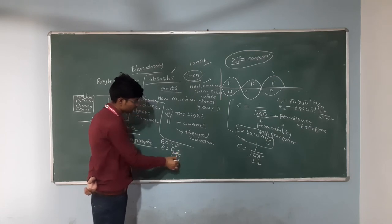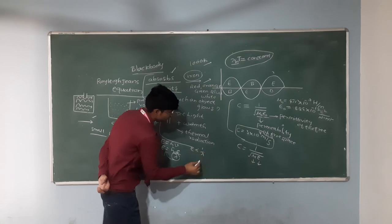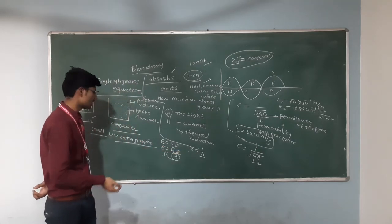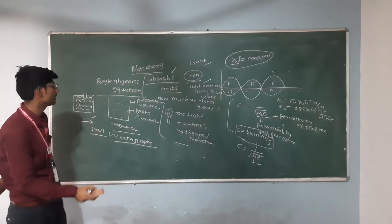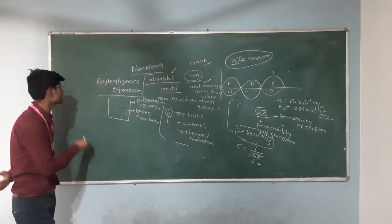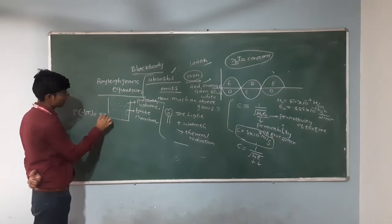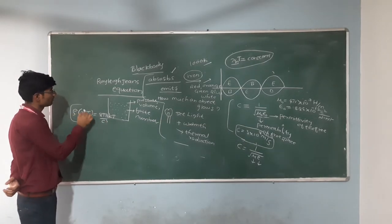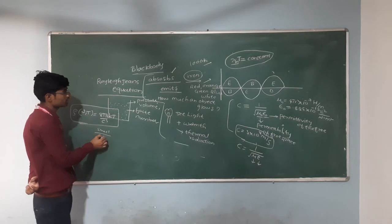Energy E = hc/λ, so energy is inversely proportional to lambda. At smaller wavelengths, the energy cannot be infinitely large — this is the ultraviolet catastrophe. The formula for Rayleigh's equation is: ρ(ν, T) = (8π ν² / c³) × kT. This equation predicts that at smaller wavelengths the energy becomes higher, which is not possible in black body radiation.